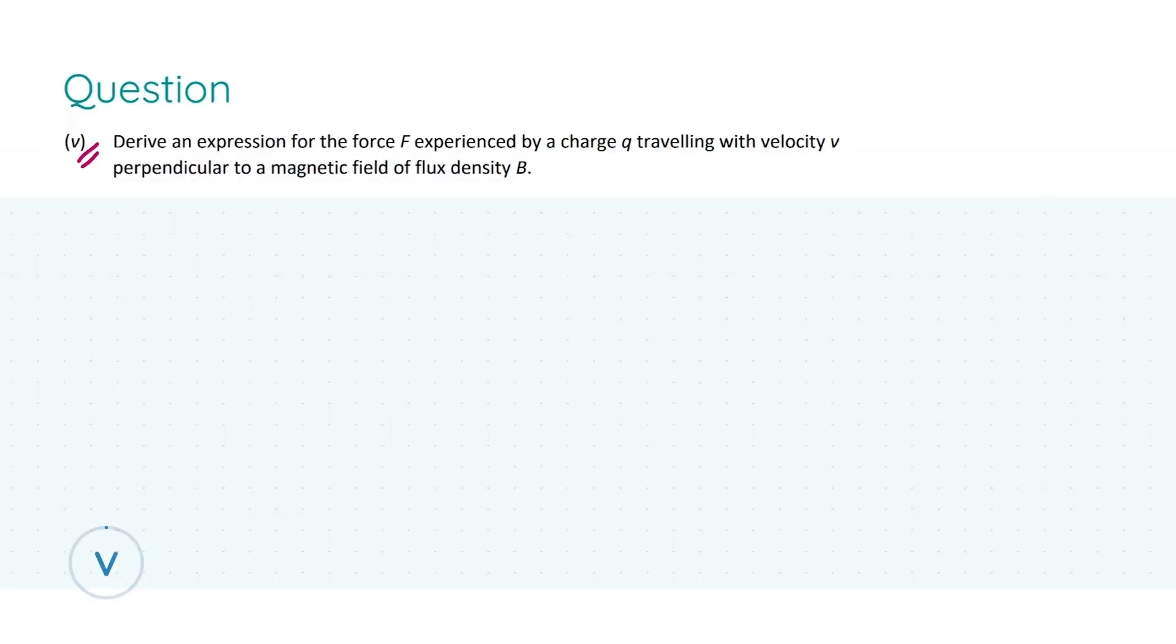For part five we're asked to derive an expression for the force F experienced by a charge q traveling with velocity v and it is perpendicular to a magnetic field of flux density B. So the goal here is that we need the force F in terms of q, v, and B. In the formulae and tables book, as we've just seen before, we actually have an equation that is of this very form, namely the formula F is equal to qvB. And we're told in the formulae and tables book that the velocity is in fact perpendicular to the magnetic field of flux density B. So our end goal is this very formula, but how do we arrive at it.